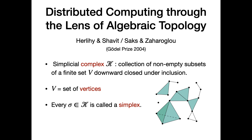A simplicial complex K is simply a collection of non-empty subsets of a finite set V, and the main property is that these subsets must be downward closed under inclusion. V denotes the set of vertices, and every subset of K is called a simplex. In the figure, you can see vertices as black dots, edges, and also a full triangle and even a tetrahedron.